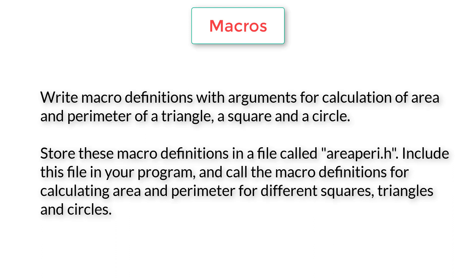We need to define macros with arguments to calculate area and perimeter of a triangle, square, and a circle. We need to write these macro definitions in a separate file called area.peri.h, include it in our source file, and use these definitions to calculate area and perimeter for various user inputs.